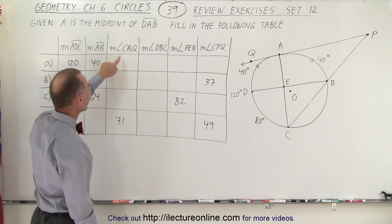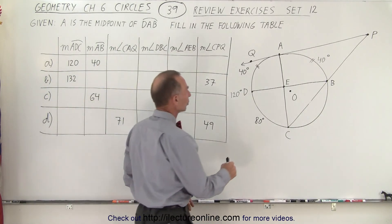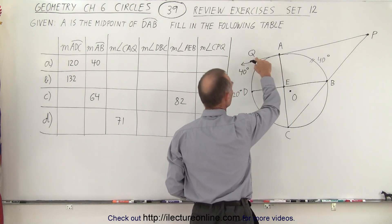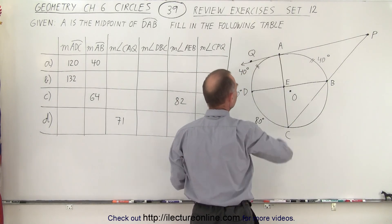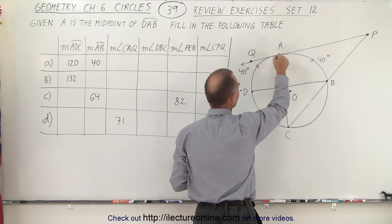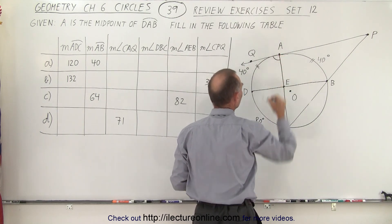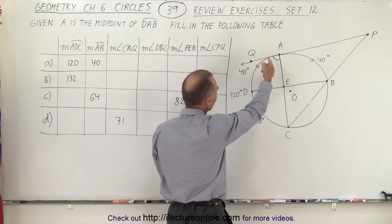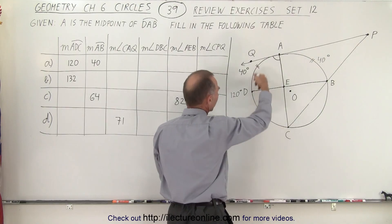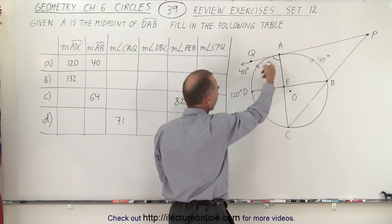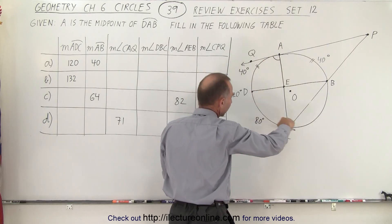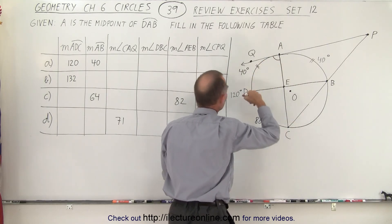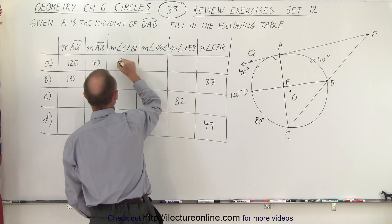First we're trying to find the measure from C to A to Q. So we need to know this angle right here. Notice that it will be half the measure of this arc right here. The total arc in degrees is 120, so this angle here would be half of 120, or 60 degrees.